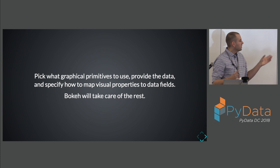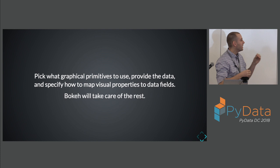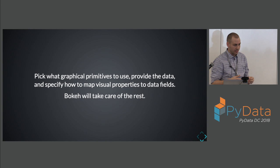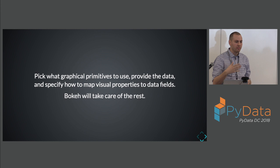This is my most important slide. If you take nothing away from this talk except this, learn this. What you really need to do is pick the graphical primitives you want to use — the lines and circles you use to build up your visualization — provide the data, and then specify how the data maps to these primitives. Let the data specify the size or color of things and Bokeh will take care of the rest. Bokeh really wants to be a declarative library where there's a lot of abstracted logic — you just define how it works and lay it out.